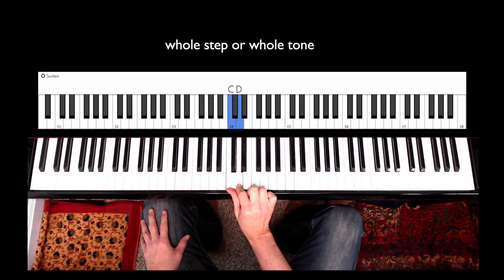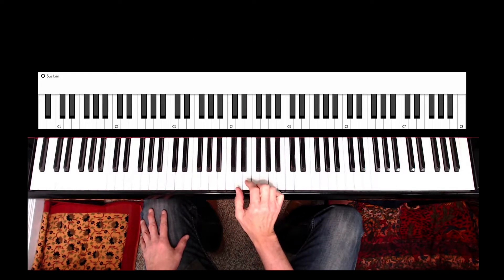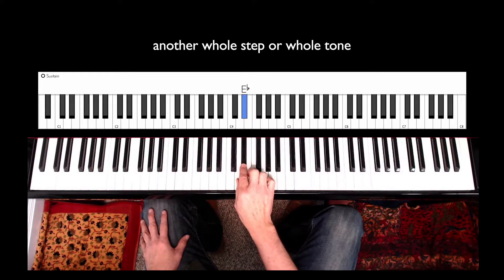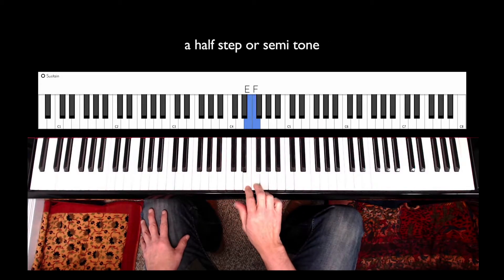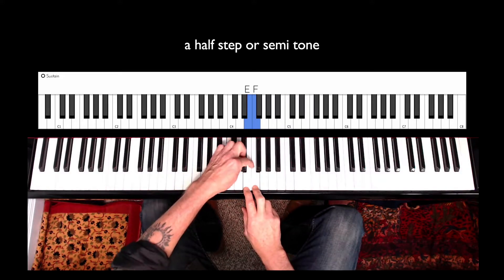First, you have two whole steps. In the key of C, it's from the note C to D, and then from the note D to E. Next, you have a half step from the note E to F — and yes, that's a half step between two white notes.